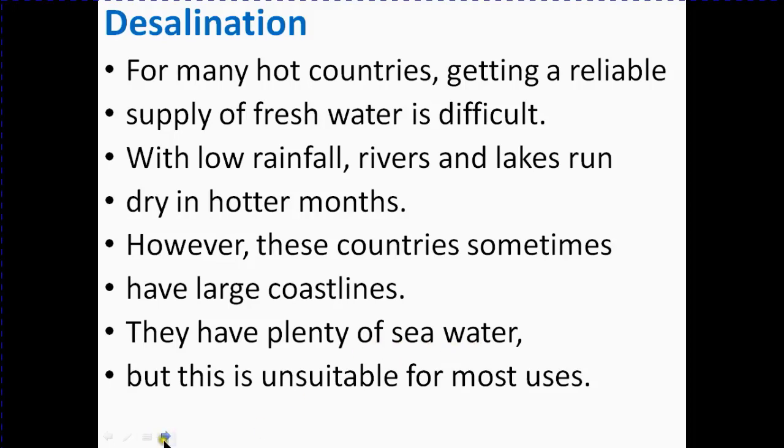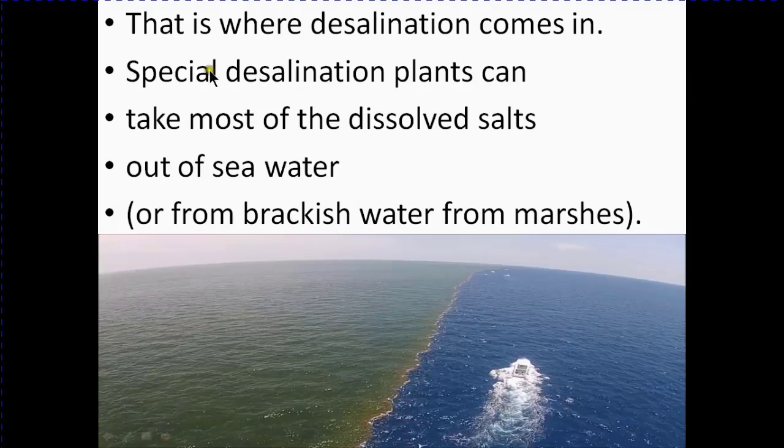That is where desalination comes in. Special desalination plants can take most of the dissolved salt out of the sea water. You know that the sea water mostly has one or more things that make it unable to use due to the amount of salts - not only calcium chloride but also other salts are present in it, so it's unable to use directly.